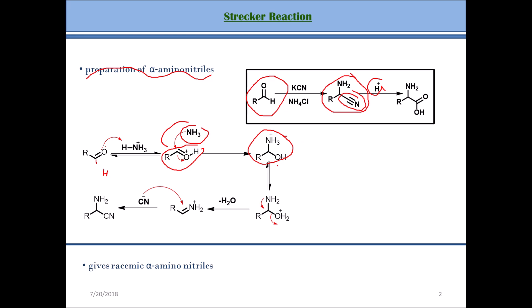This intermediate is reversible — it can exist in different forms. In one form, one of the hydrogens from NH3+ gets transferred to the OH, generating an oxonium ion again. The oxonium ion is a very good leaving group, and the nitrogen donates its lone pair of electrons, causing OH2+ to leave as water. Water is eliminated and we get this intermediate. Then CN minus — from the potassium cyanide in solution — attacks this electrophilic carbon, and we finally get our alpha amino nitrile.